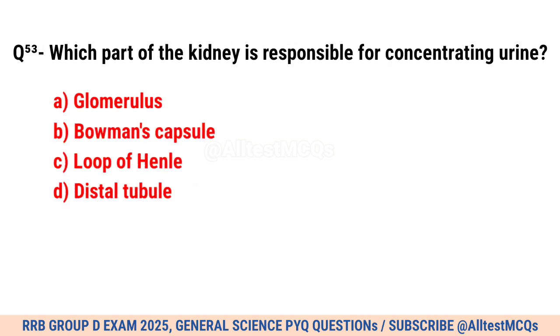Question No. 53. Which part of the kidney is responsible for concentrating urine? Correct option is C. Loop of Henle.